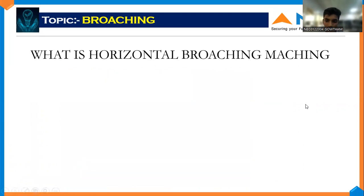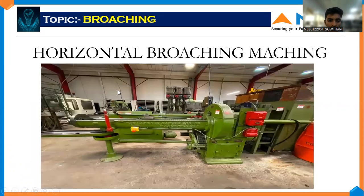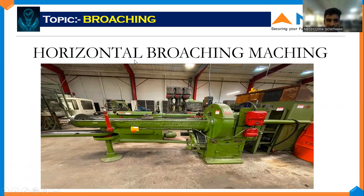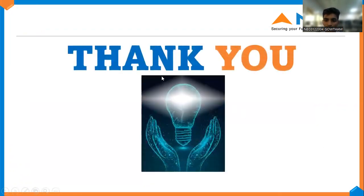The horizontal broaching machine can be used for pull, push, continuous, rotary, and static broaching. We can do both pull and push, and rotary broaching as well. This machine can also be called a universal broaching machine. Thank you.